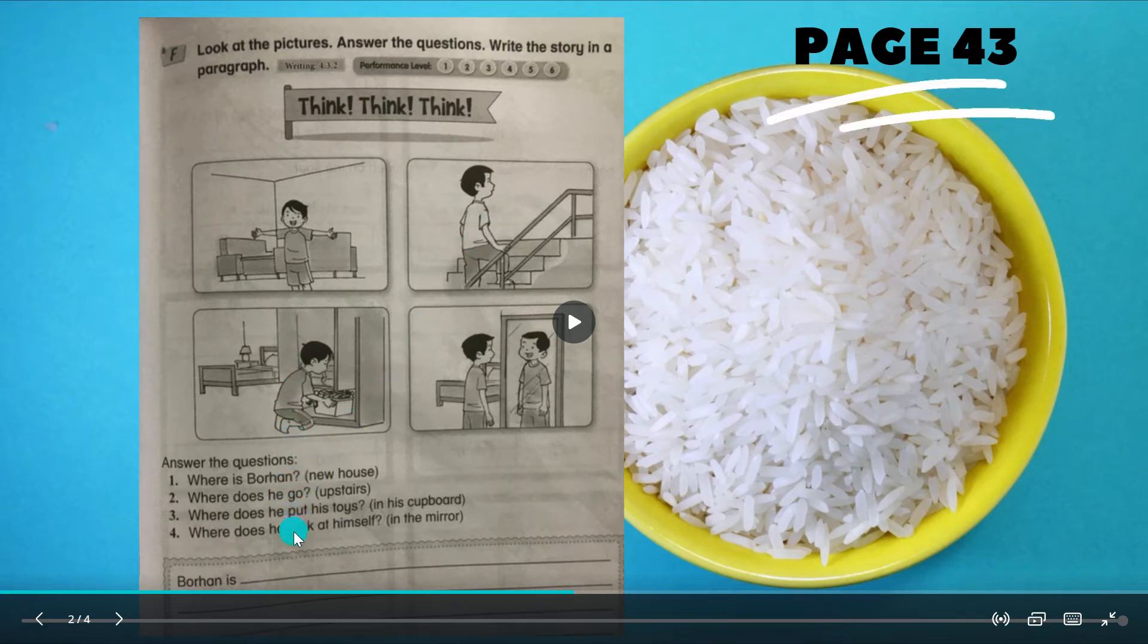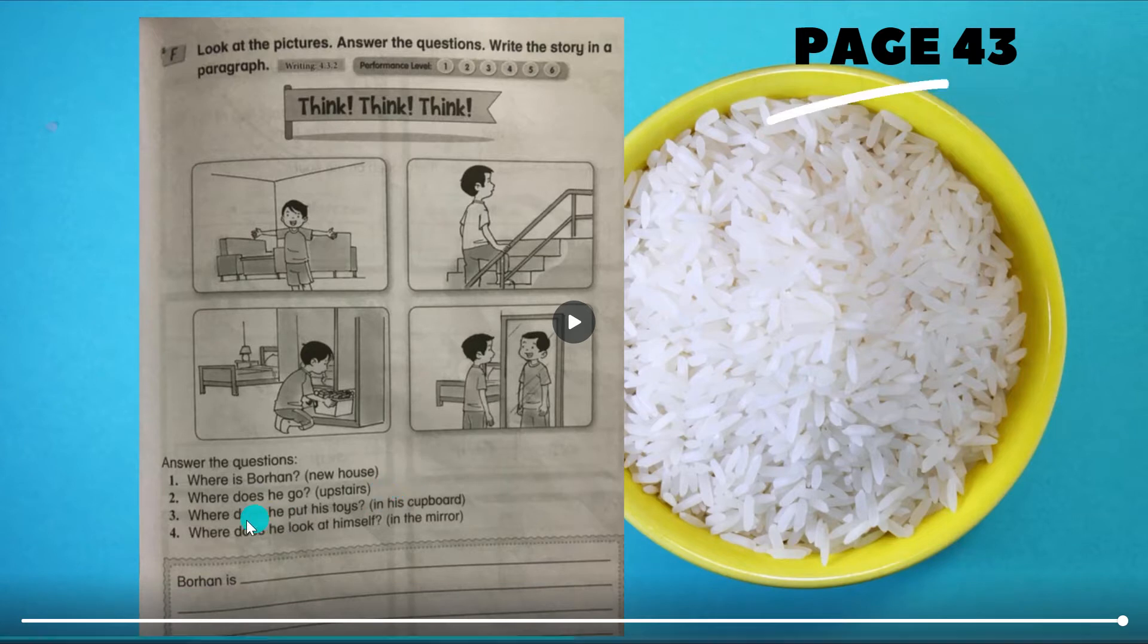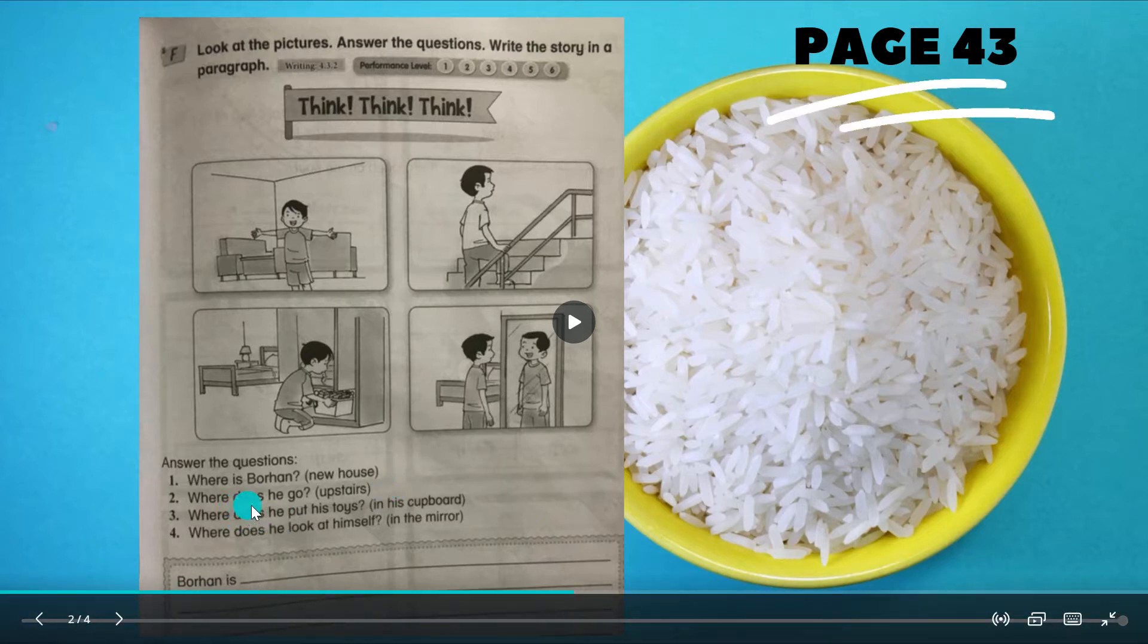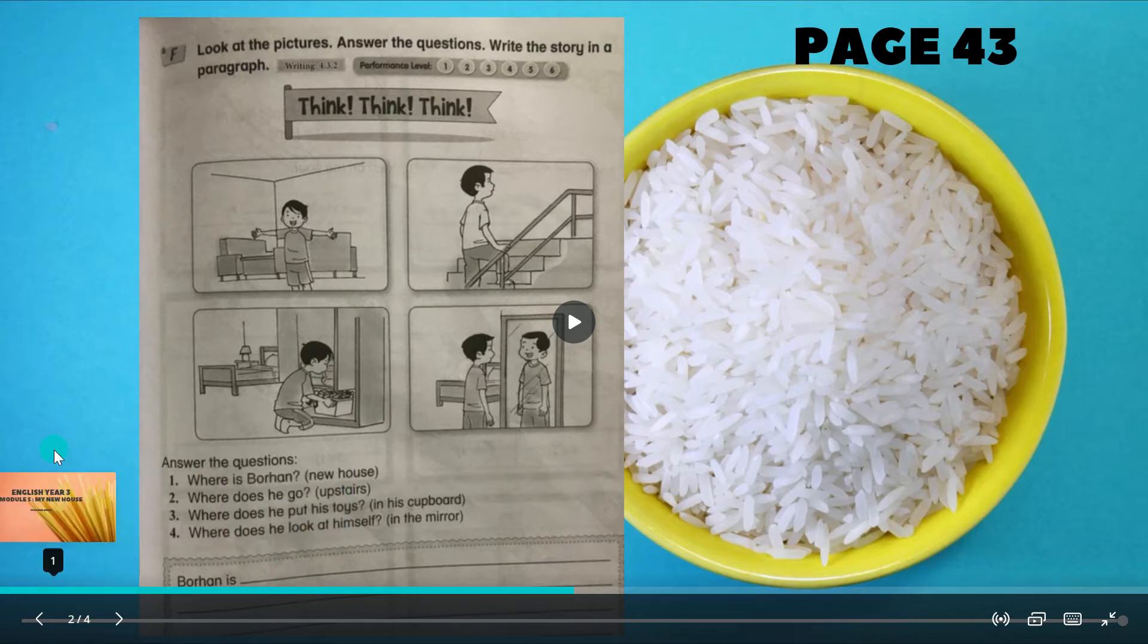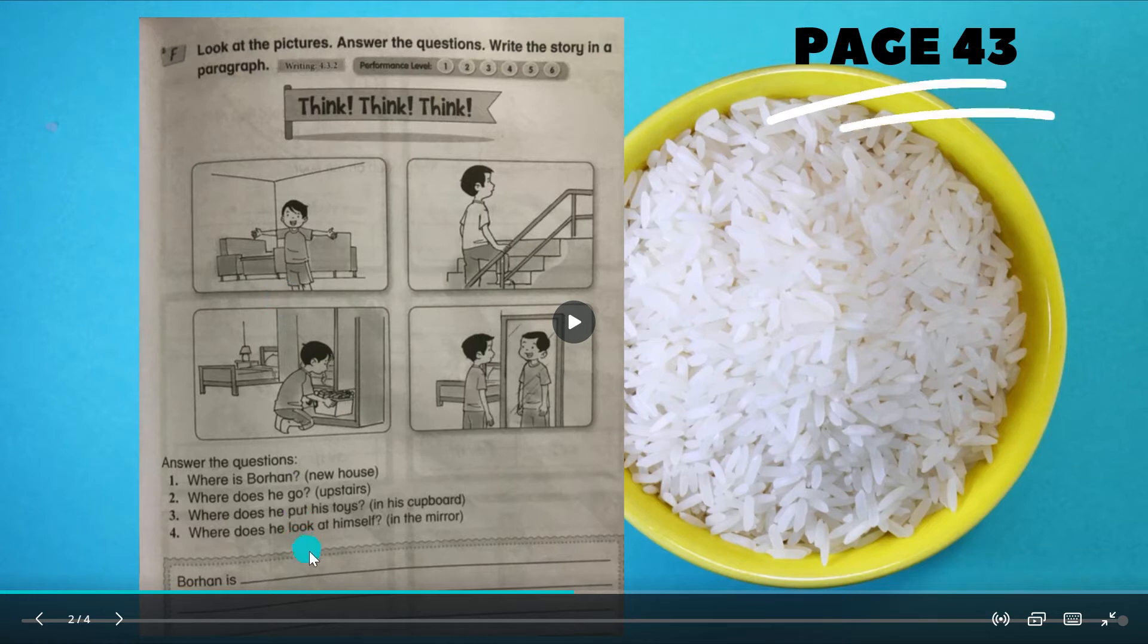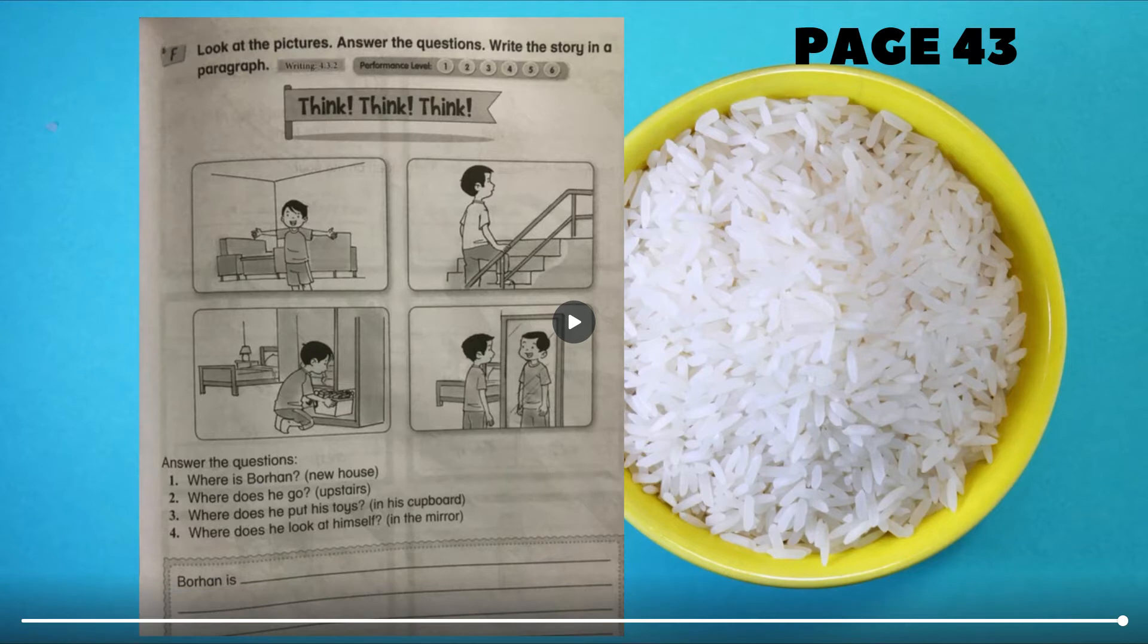Question three for picture three and question four for picture four. So awak kena jawab soalan ini dan lepas jawab awak buat di bawah dia. Bawah dia ni yang dia sediakan ruang di muka surat 43. Tulis macam satu perenggang - empat ayat ada empat ayat.